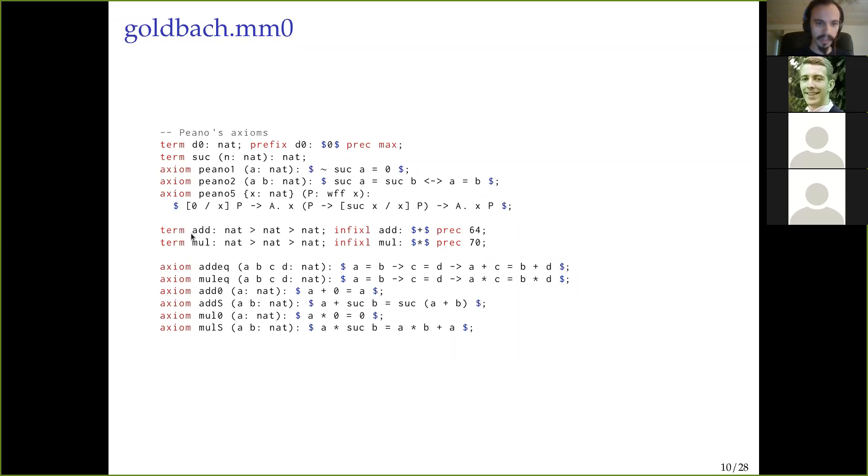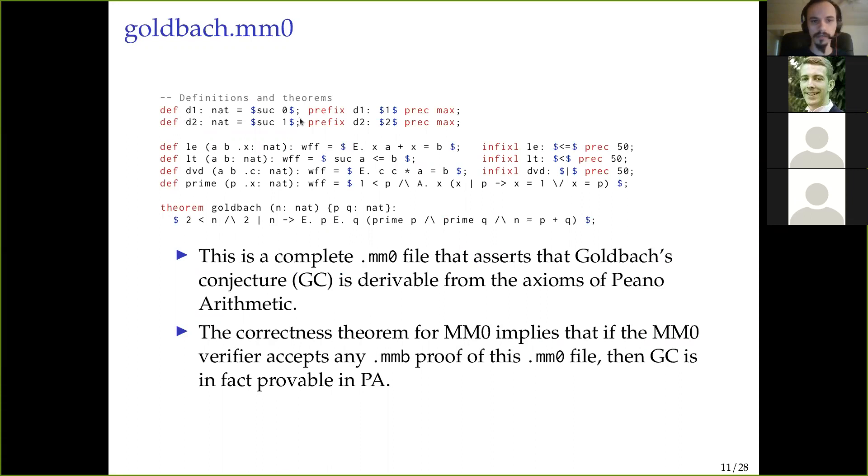Predicate logic continues in much the same way. We axiomatize for all. And then we can define exists. We axiomatize equality, give a bunch of axioms, defining how predicate logic works, and define substitution. And then we can use that to define the actual non-logical axioms. These are the Peano axioms. So, for example, this here is the induction axiom. We add addition, multiplication, and then we axiomatize how they operate.